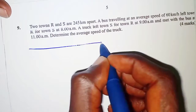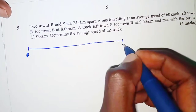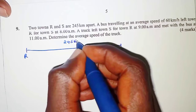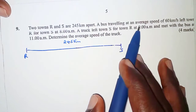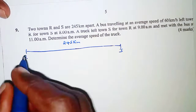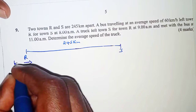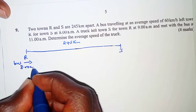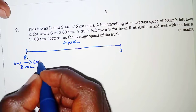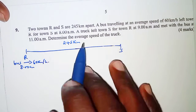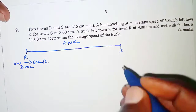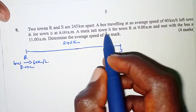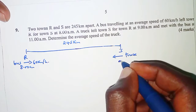We have two towns, town R and town S, and the two towns are 245 kilometers apart. A bus traveling at an average speed of 60 kilometers per hour left town R for town S at 8 a.m., traveling at 60 kilometers per hour. Then a truck left town S for town R at 9 a.m.